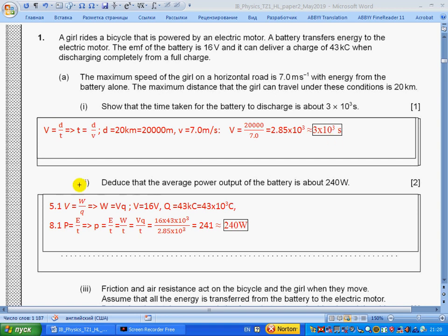Part ii: Deduce the average power output of the battery is about 240 watts. Section 5.1: voltage equals work over charge, so work equals voltage times charge. The charge should be in coulombs. On the other hand, section 8.1: power equals energy over time. Energy equals work, so work equals VQ.